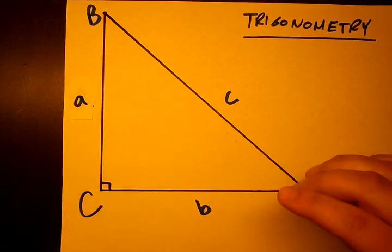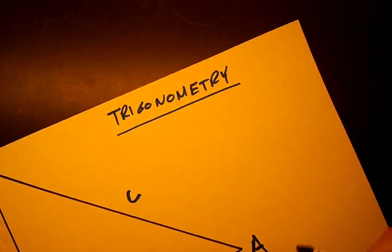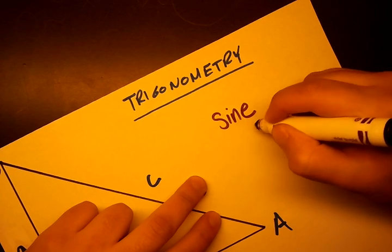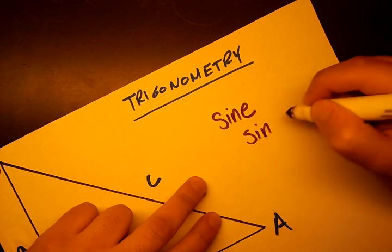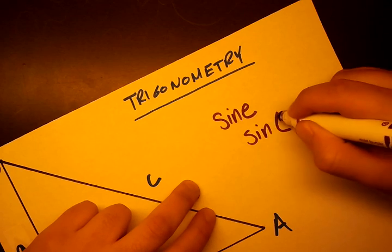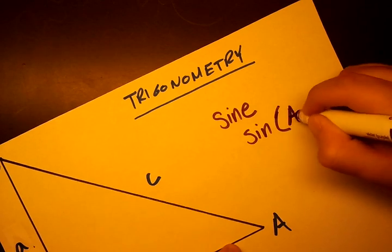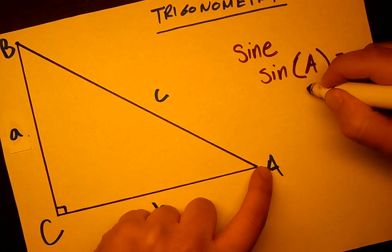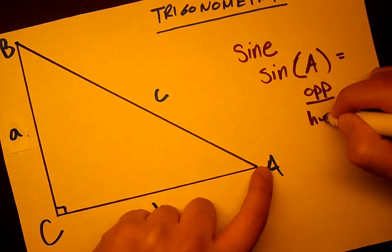So now we'll just go over what the basic trigonometric functions are. So the function called sine, abbreviated s-i-n. And the sine of an angle, so sine of A, angle A, equals the opposite over hypotenuse.